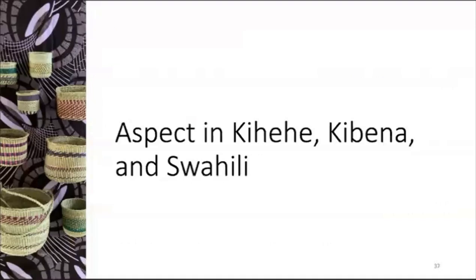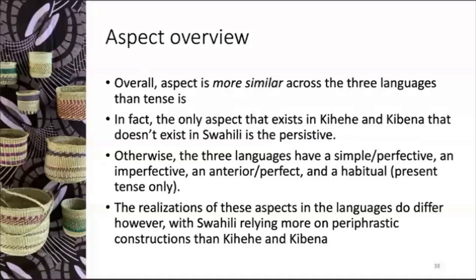Overall, aspect is more similar across the three languages than tense is — which I wasn't necessarily expecting. The only aspect that exists in Kihehe and Kibena that doesn't exist in Swahili is the persistive. Otherwise, the three languages share a simple/perfective form, an imperfective, an anterior/perfect, and a present-tense habitual. The realizations do differ, however, with Swahili relying more on paraphrastic constructions than Kihehe and Kibena.